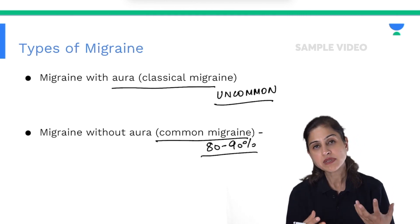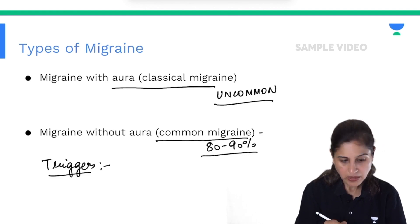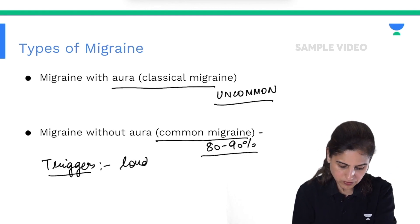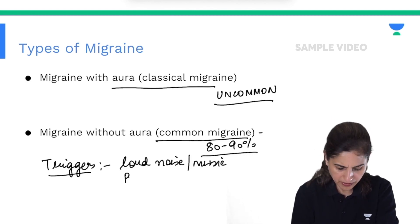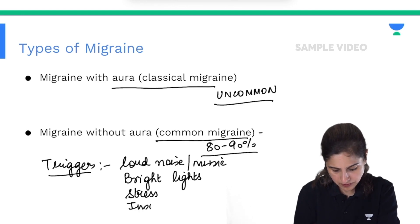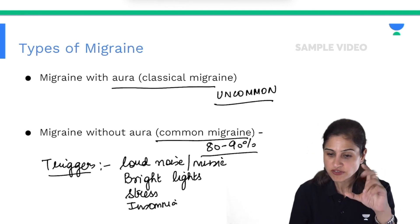The migraine symptoms get triggered by certain stimuli. What are these triggers? The triggers can be loud noise or music, bright lights, stress, or insomnia. All of these can trigger an attack of migraine.